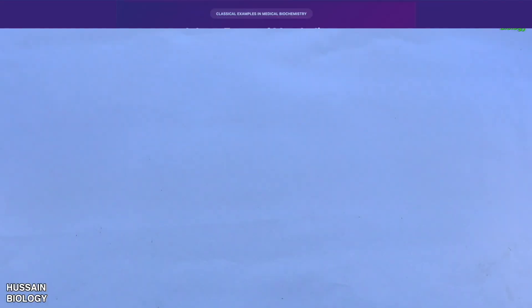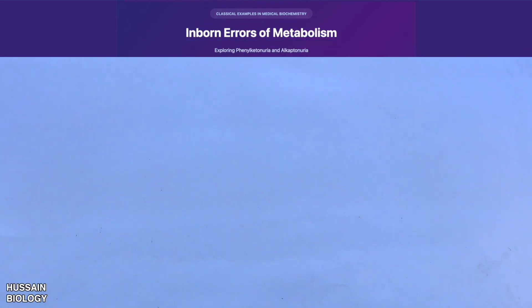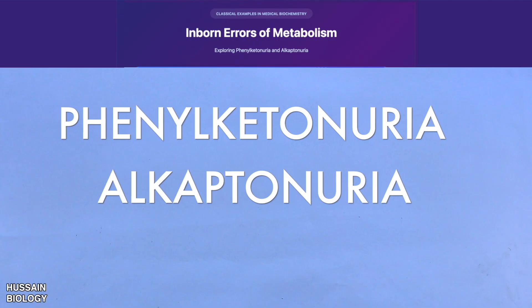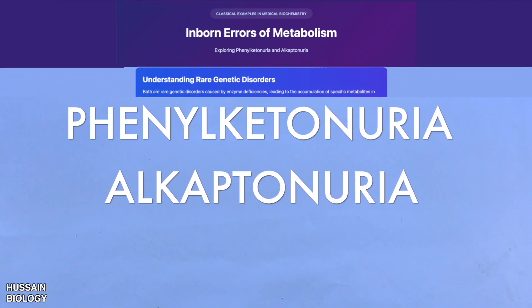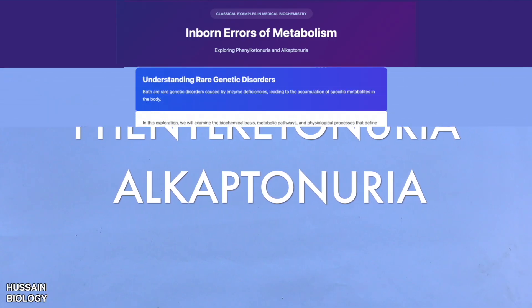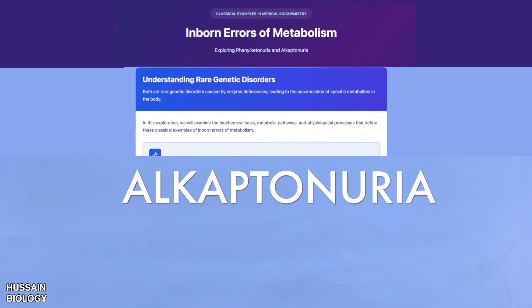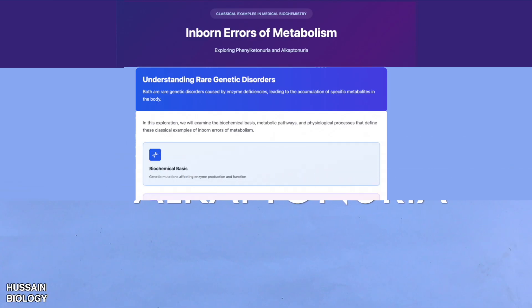In this video we will discuss two classical examples of inborn errors of metabolism: phenylketonuria and alkaptonuria. Both are rare genetic disorders caused by enzyme deficiencies leading to accumulation of specific metabolites in the body.